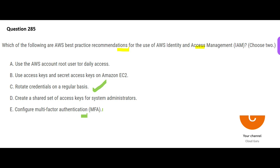Multi-factor authentication works similarly to online banking — after entering your credentials, a high-value transaction prompts an OTP on your mobile phone. An app generates a secondary code you must provide. The same applies here: using MFA ensures the environment is absolutely foolproof and secure.